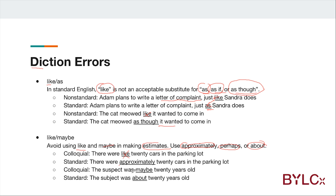For example, the non-standard form is 'the suspect was maybe 20 years old.' This may be transformed to the standard form: 'the subject was about 20 years old.' In standard English, we use 'about' rather than 'maybe' when estimating.